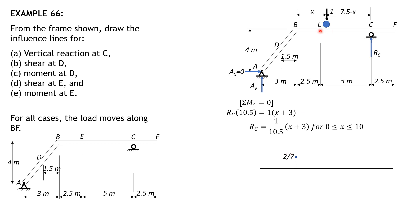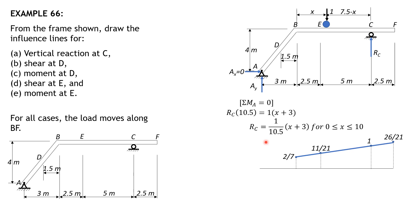When X is 2.5, then 2.5 plus 3 over 10.5 is 11 over 21. When X is 7.5, then 7.5 plus 3 over 10.5 is 1. And when X is 10, then 10 plus 3 is 13 over 10.5, that would be 26 over 21. So plotting, that's the influence line for reaction at C.